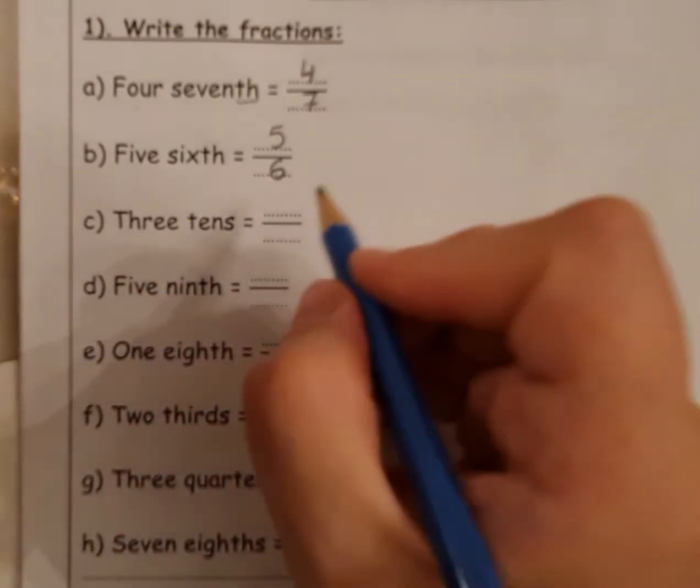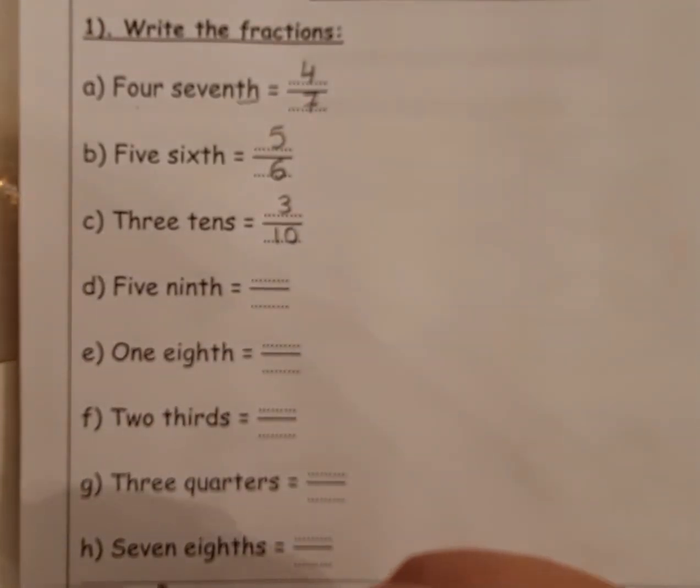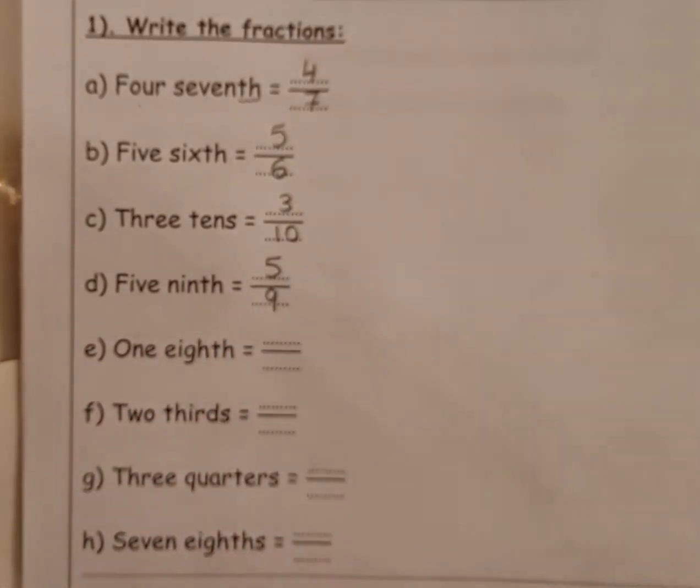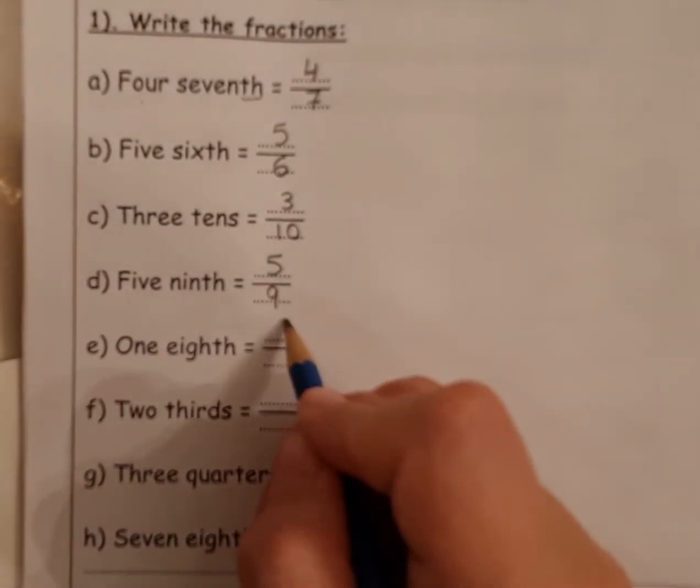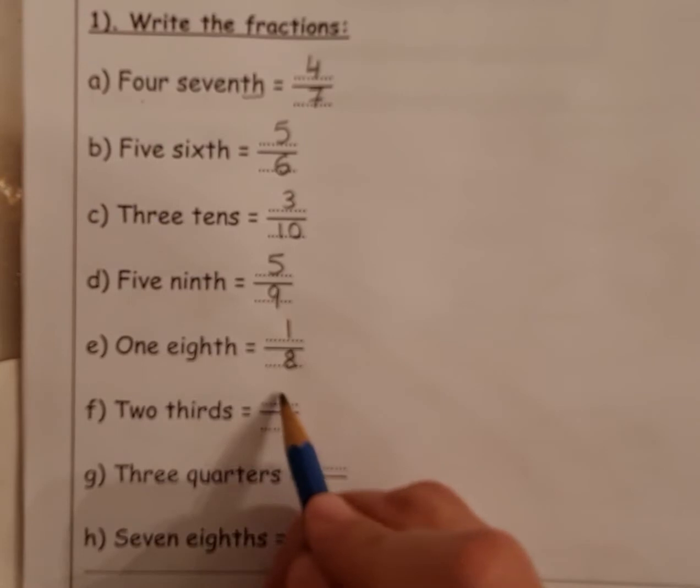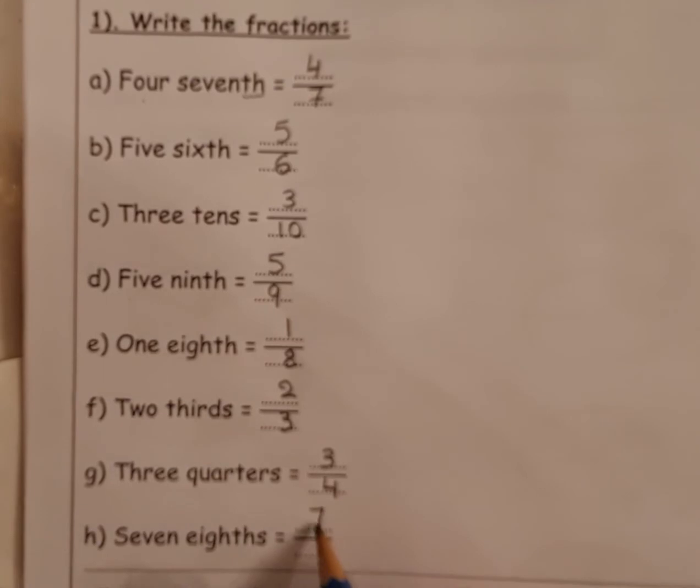Three tens. Three tens, okay. Five ninths - so five will be up and nine will be down. One eighth - so I'm going to write one here and eight down. Two thirds - we know thirds means three, so two thirds. Three quarters. Three quarters, four down. Seven eighths - it will be seven and then eight down.